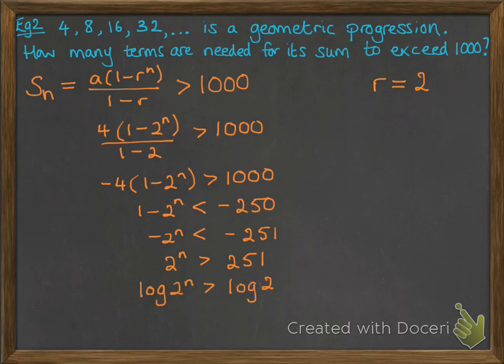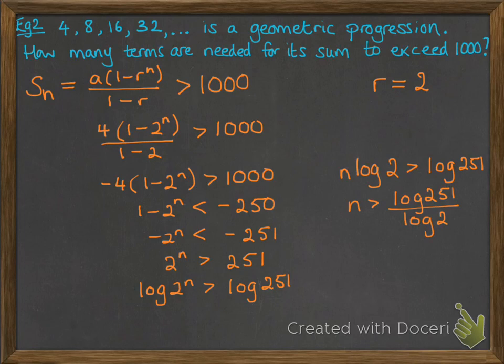Now take log of both sides. Bring down that n. Divide through by log of 2. Again check that you haven't divided by a negative. Log of 2 is positive so we're fine.